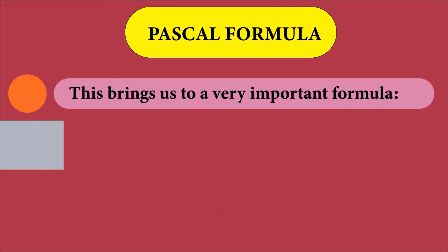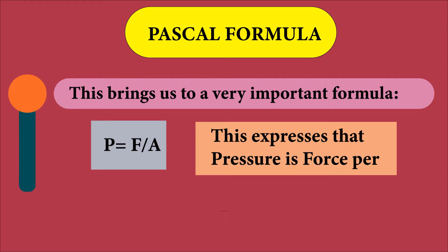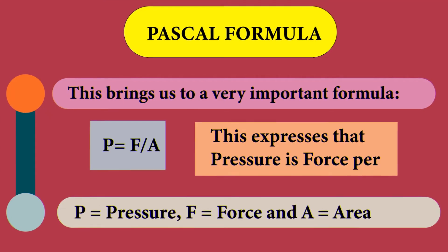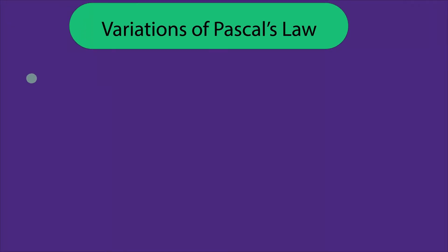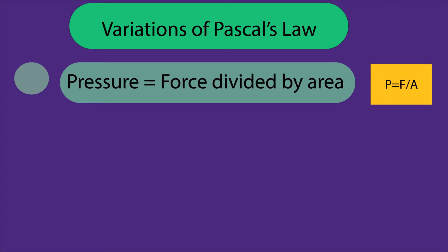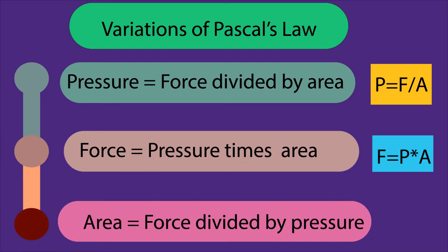The Pascal Law brings us to a very important formula. Pressure is equal to force per unit area. From this we have variation of Pascal Law. Pressure is equal to force divided by area. Force is equal to pressure times area. Area is equal to force divided by pressure.